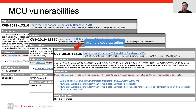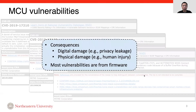Recent years have seen a growing number of MCU vulnerabilities. For example, in 2018, a buffer overflow vulnerability was found on FreeATOS, which is a popular operating system for MCU devices. The vulnerability allows remote attackers to execute arbitrary code on the MCU. MCU vulnerabilities can cause not only digital damage, such as privacy leakage, but also physical damage, such as human injury. It's worthwhile to mention that most vulnerabilities are from firmware.